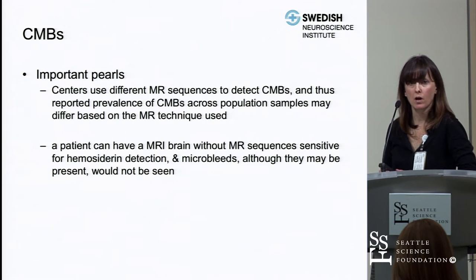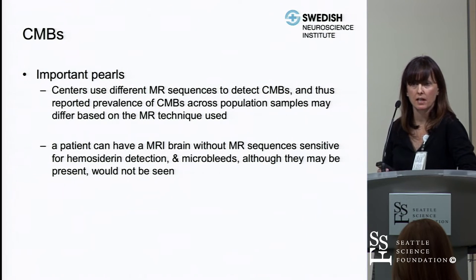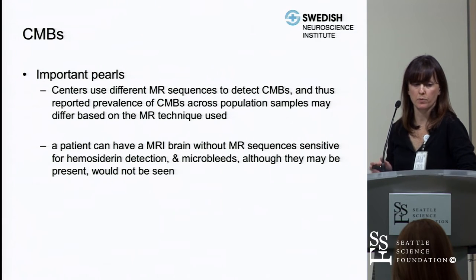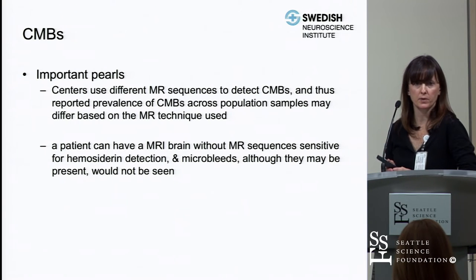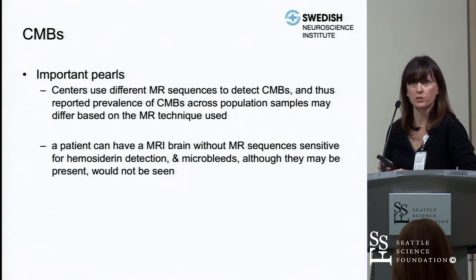At Issaquah and First Hill we use susceptibility-weighted images on inpatients, and at Cherry Hill we have historically used gradient echo images. The level of detection varies with how sensitive those studies are. When you look at research studies or case series on patients with cerebral microbleeds, the reported incidence varies because it depends on which MR sequence was used.